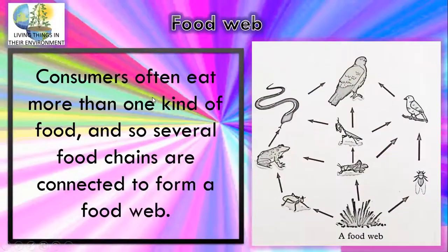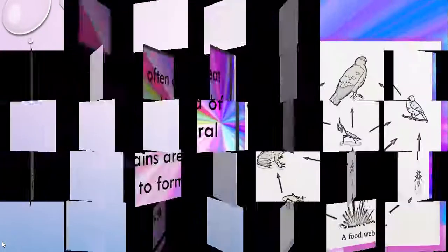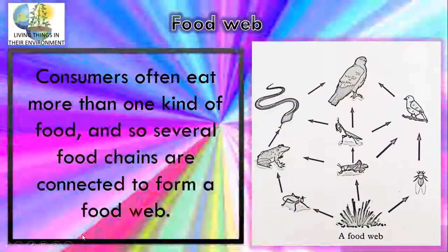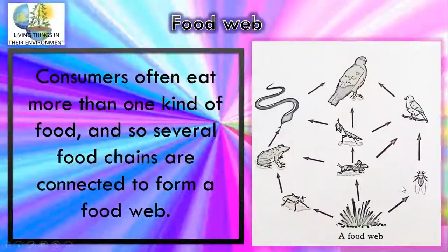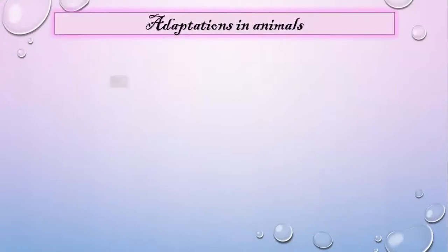Food web: consumers often eat more than one kind of food. So several food chains are connected to form a food web. As you can see in the picture, green grass is eaten by several animals or insects like flies, grasshopper, and cricket. Then eaten by other carnivores — cricket, frog, and bird — and then eaten by an eagle. That is the connection of different food chains linked together.